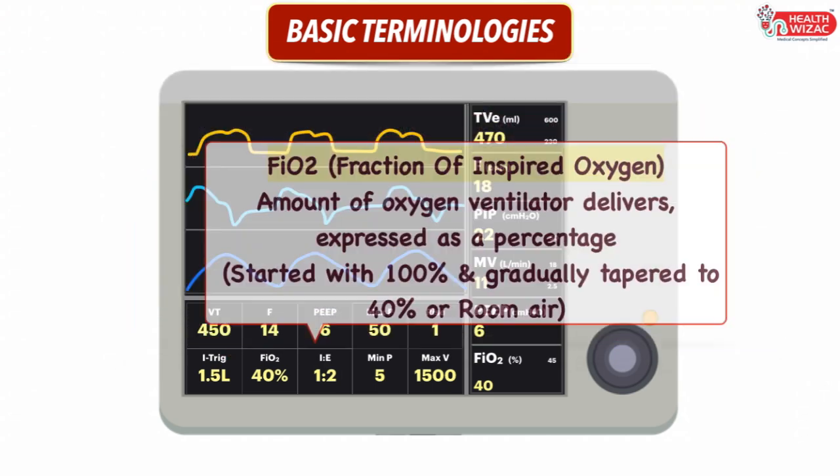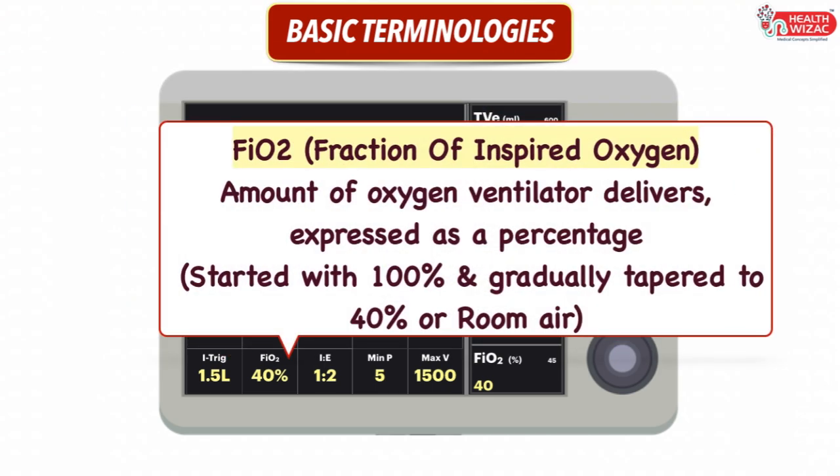Next is FiO2, or Fraction of Inspired Oxygen. It is the amount of oxygen the ventilator delivers and is usually expressed as a percentage. It is usually started at 100% and gradually tapered to 40% or room air depending upon the clinical condition of the patient and the ABG test.